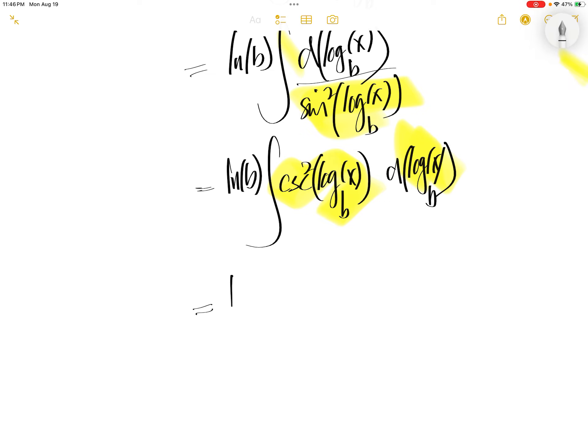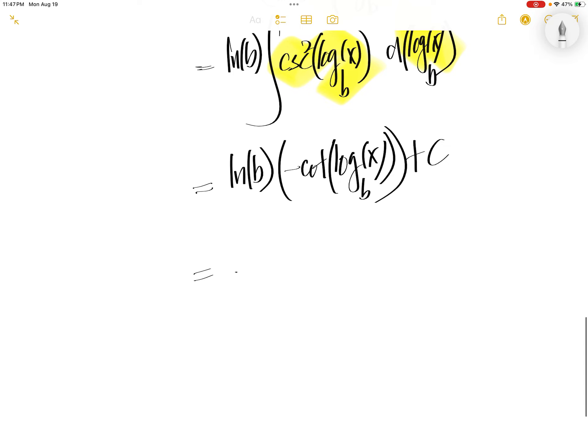Now, that is a familiar integral. The integral of cosecant squared of something is negative cot of that something. That something here is log x to the base b plus c.